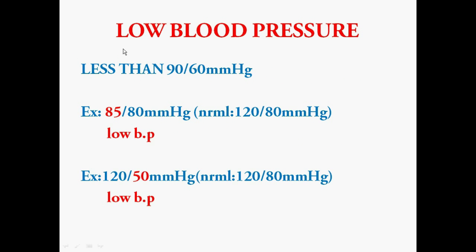A patient is said to have low BP if their BP value is less than 90/60 mmHg. Even if just one of the two numbers is lower, it is considered low BP. For example, if the diastolic pressure is normal at 80 but the systolic pressure drops below 90, it is low BP. Similarly, if the systolic pressure is normal at 120 but the diastolic pressure drops below 60, it is also considered low BP.